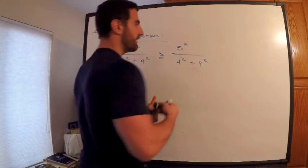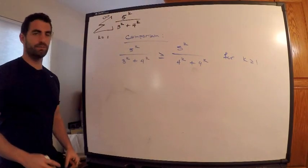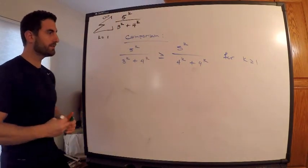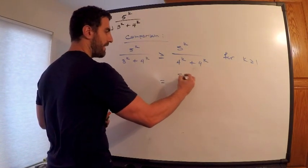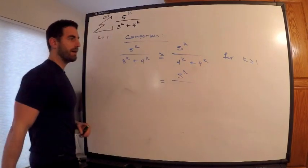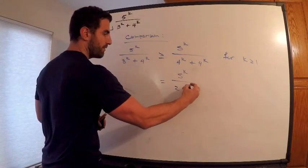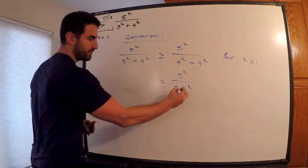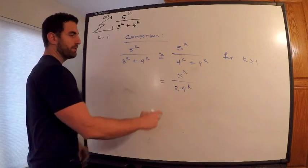We pretty much have it now because what is the right-hand side? The right-hand side is equal to 5^k divided by—I have the same thing I'm adding two times—4^k, two of those. Let me write this one other way.